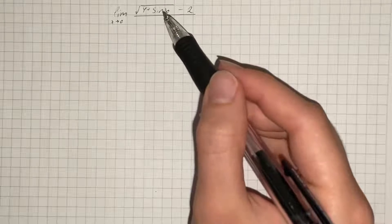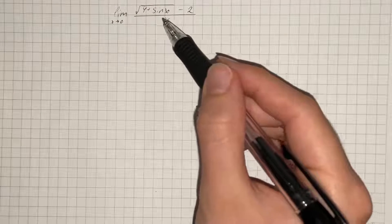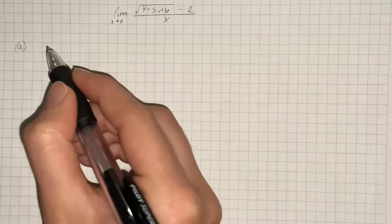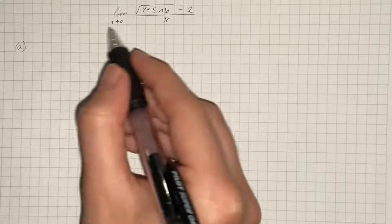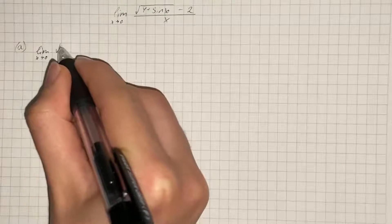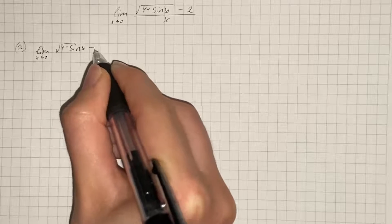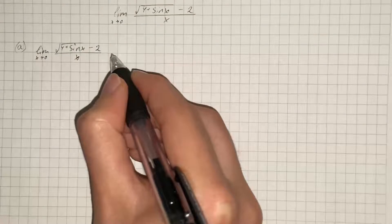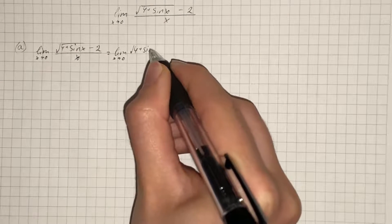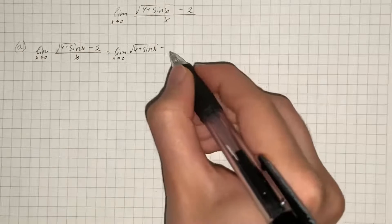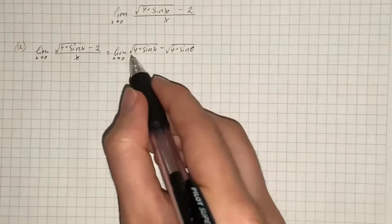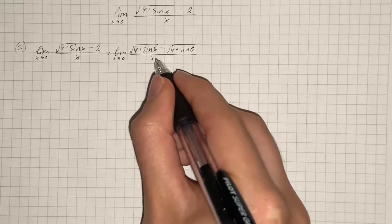We are given a limit which is the derivative of a composite function g at point a. First, we have to find the possible function g at a number a. Our limit as x approaches 0 of square root of (4 plus sine of x) minus 2, over x, can be written as the limit as x approaches 0 of square root of (4 plus sine of x) minus square root of (4 plus sine of 0), over x minus 0.